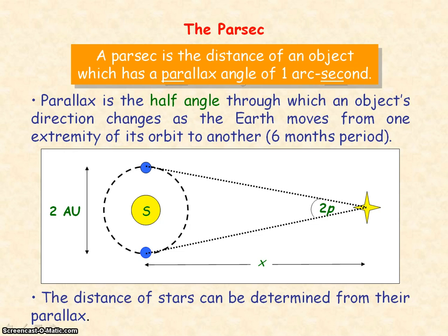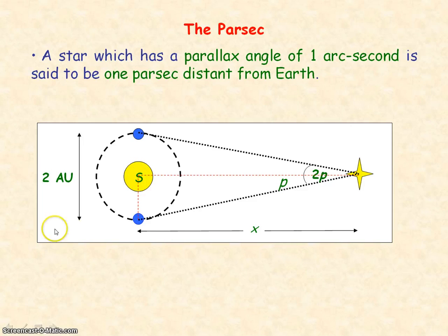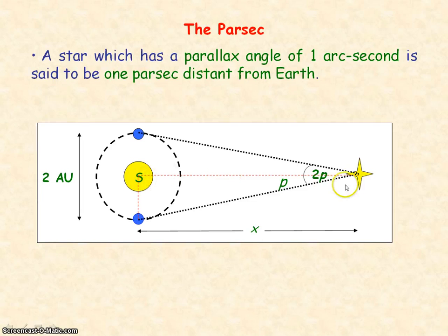From the parallax, we can determine the distance of stars. So a star, if it has a parallax angle of one arc second, then the star will be one parsec distant from Earth. As this angle of one arc second is very small, the distance the star is from the Sun is approximately the same distance as the star is from Earth.